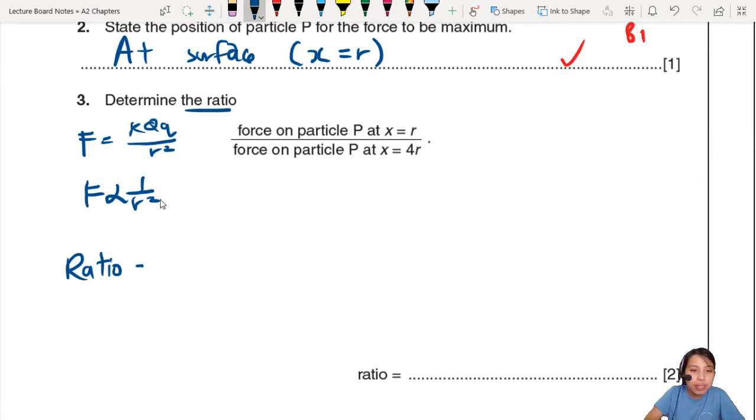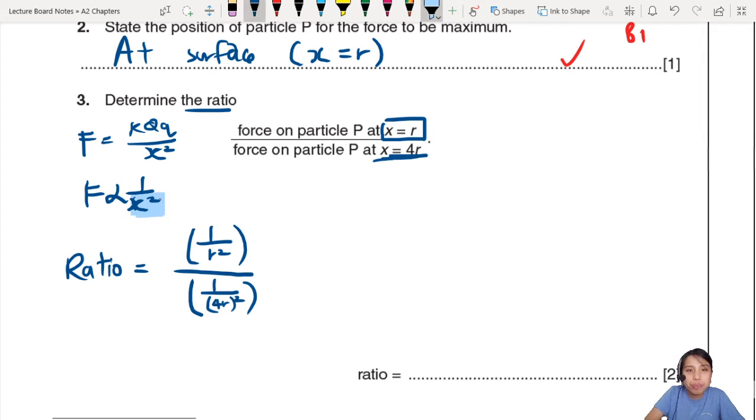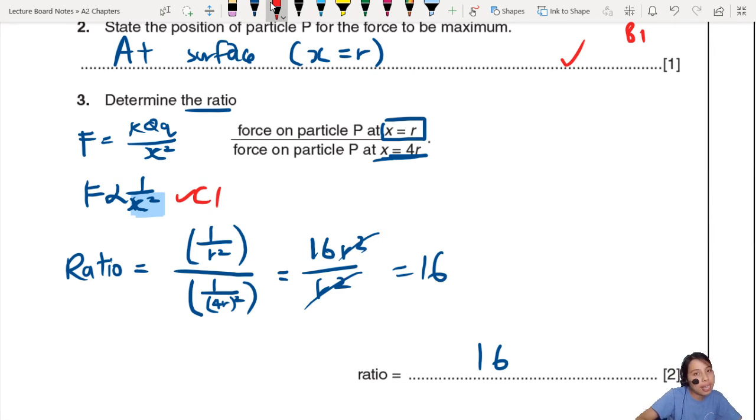The ratio: at X equals to R, 1 over R square, that will be our force ratio. And then the bottom one is 1 over 4R square. Must be careful - this is 4R, the whole thing, squared, because X equals to 4R. This will give me 16 R square over R square. Divide out - 16. Two marks. First mark is from here, if you knew the relationship of F against X square, 1 over X square. And your final answer is 16.